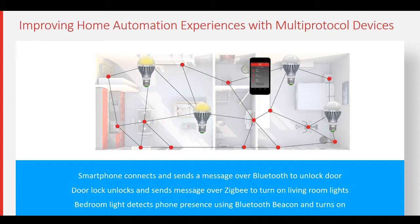When I bring my smartphone into the bedroom, the lights automatically turn on after detecting the phone's presence thanks to Bluetooth beacons. By supporting multiple protocols such as Zigbee and Bluetooth, smart devices like door locks and connected lights are able to improve consumer experience through direct smartphone control and location-aware automation.